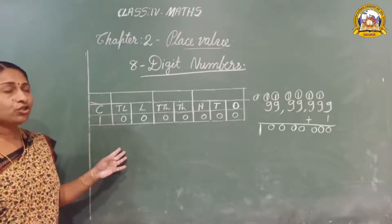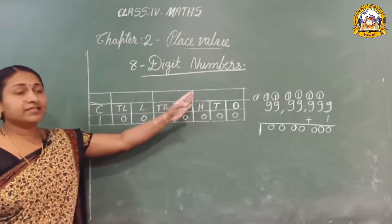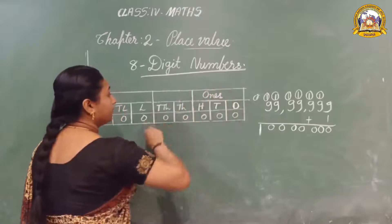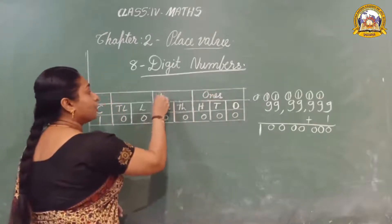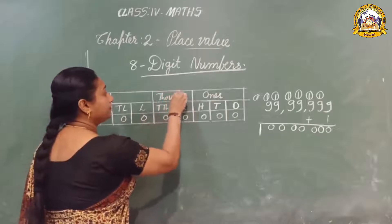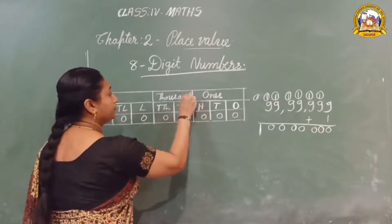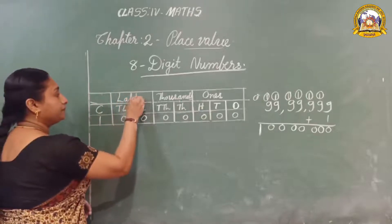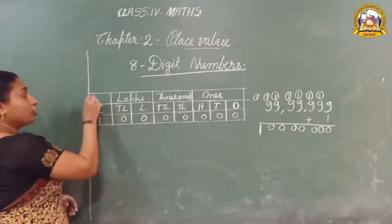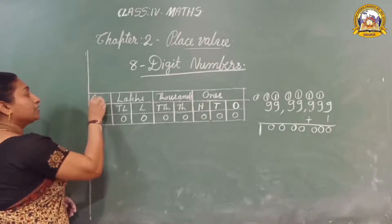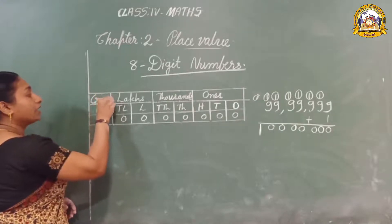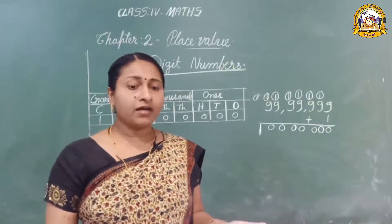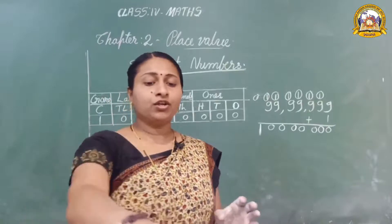Now, how many periods are there? One's period, thousands period, lakhs period — and a new one: crore. Spelling: C-R-O-R-E — crore. So the crores period is the new fourth period.